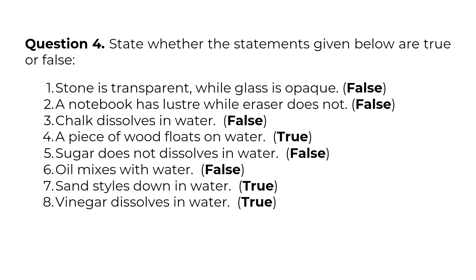Question 4: State whether the statements given below are true or false. Stone is transparent while glass is opaque — False. A notebook has luster while eraser does not — False. Chalk dissolves in water — False. A piece of wood floats on water — True. Sugar does not dissolve in water — False. Oil mixes with water — False. Sand settles down in water — True. Vinegar dissolves in water — True.